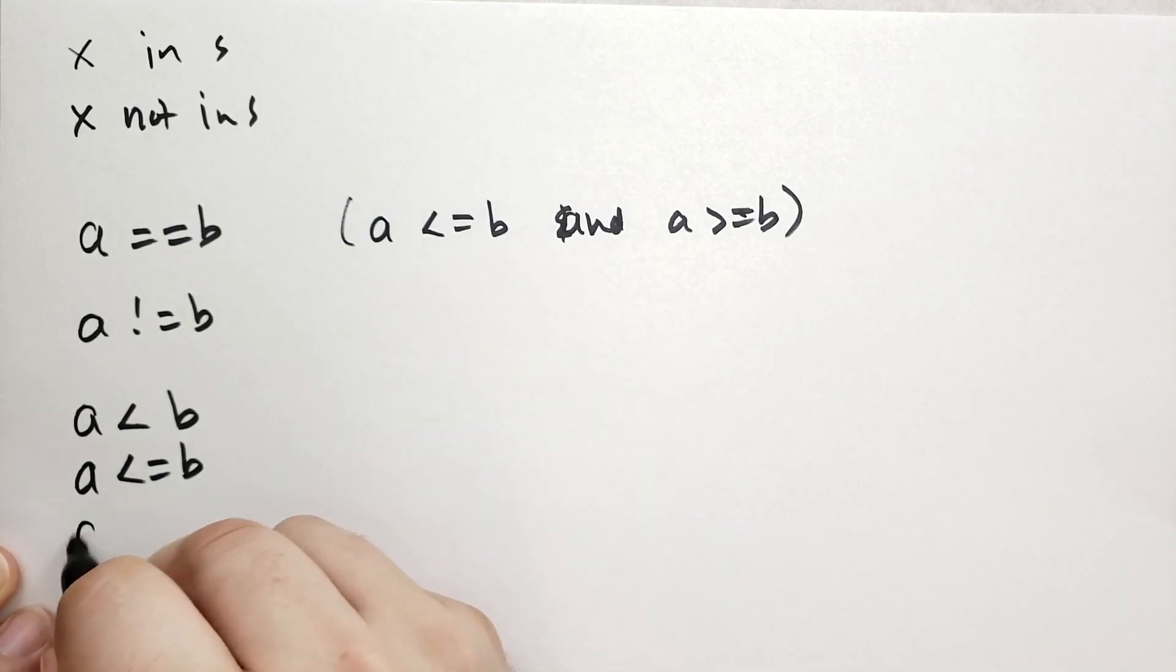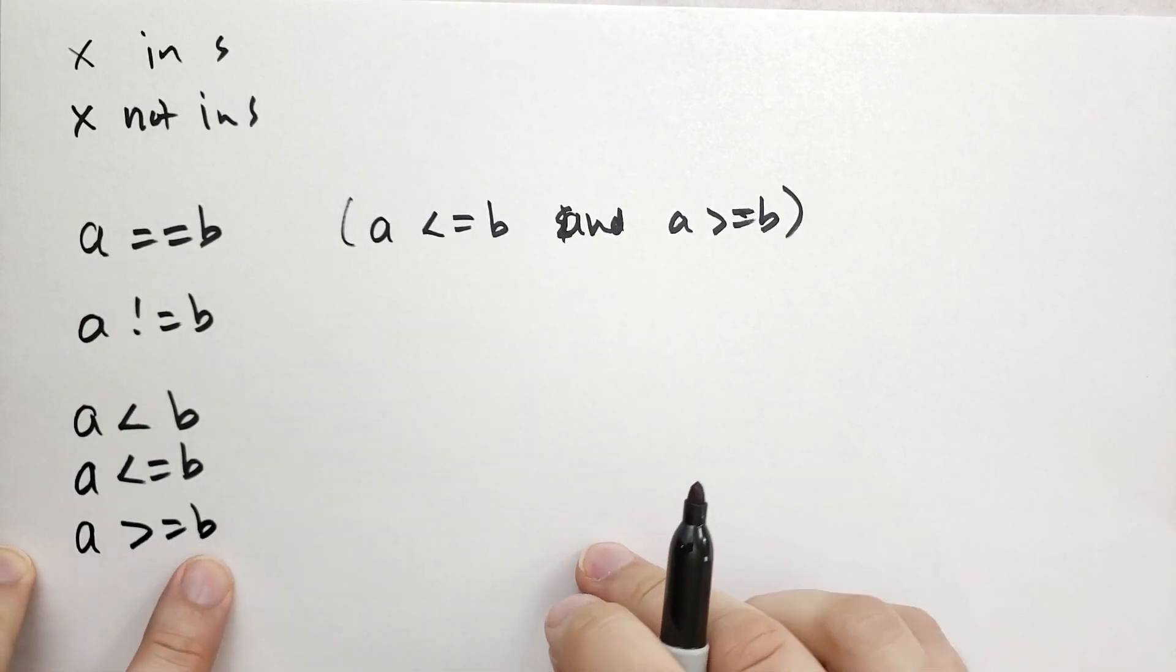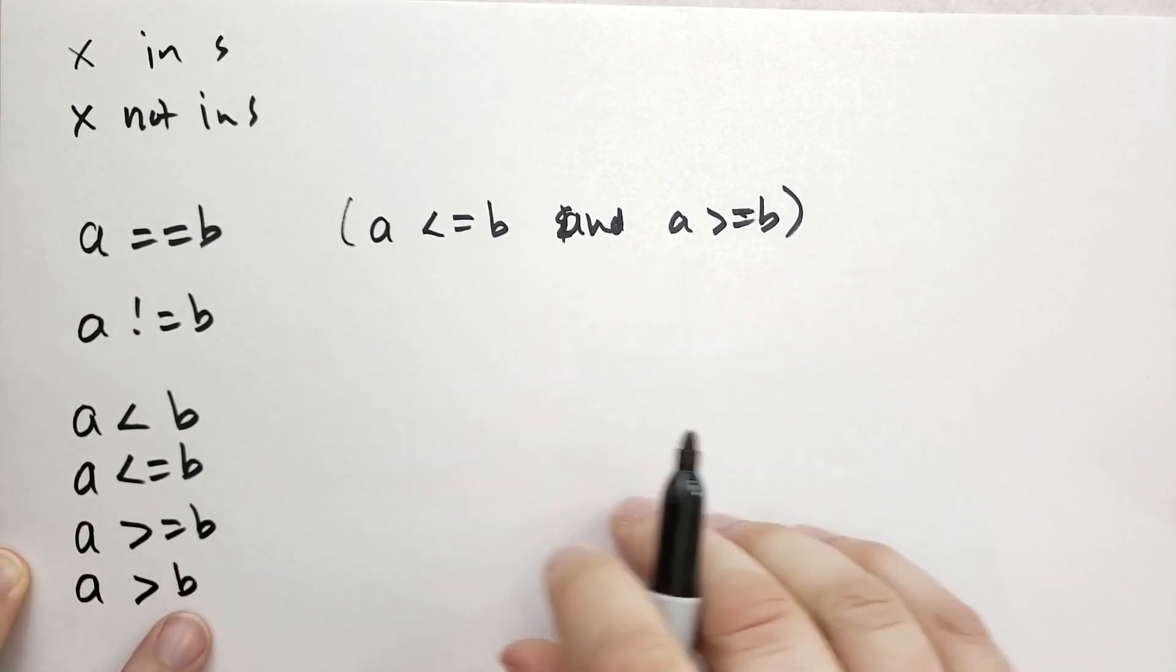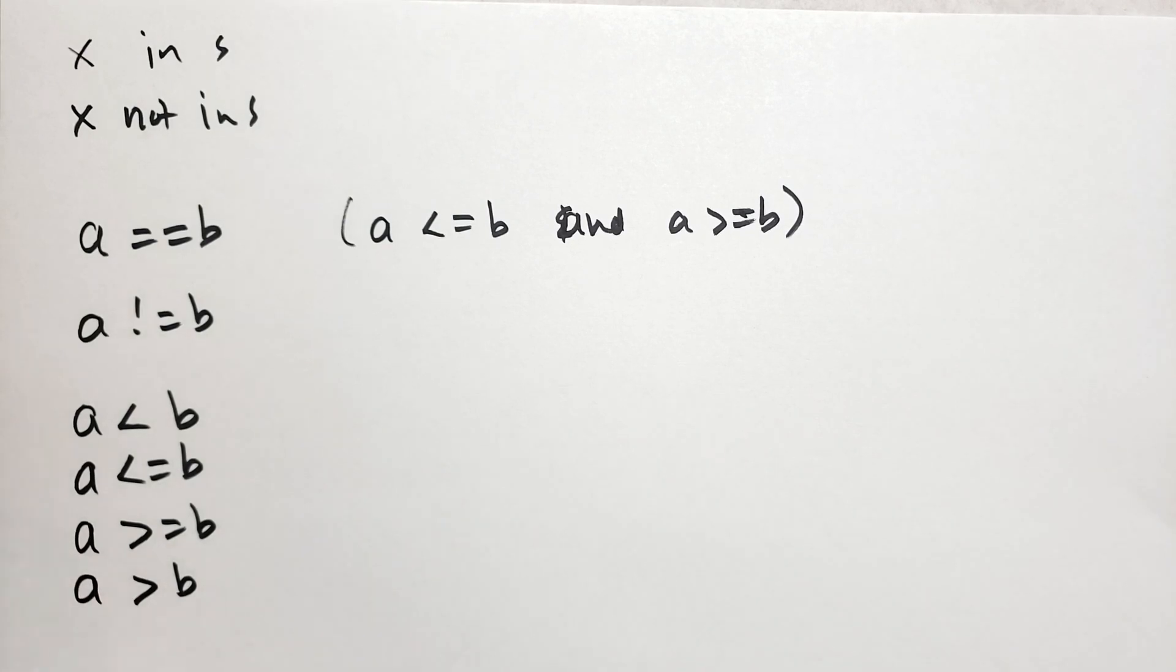And then you have a is greater than or equal to b, which says all the elements of b are found in a. And then a is greater than b means that all the elements of b are found in a and a has additional elements.